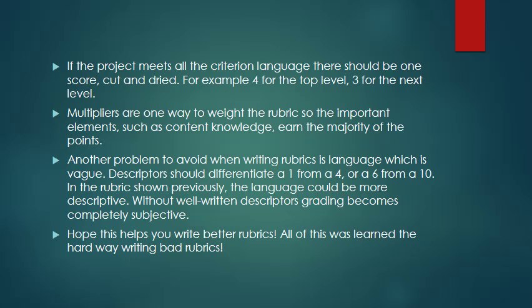If the project meets all the criterion language, there should be one score, cut and dried. For example, 4 for the top level, 3 for the next level. Multipliers are one way to weight the rubric so the important elements, such as content knowledge, earn the majority of the points.